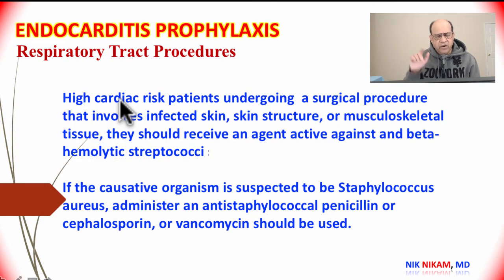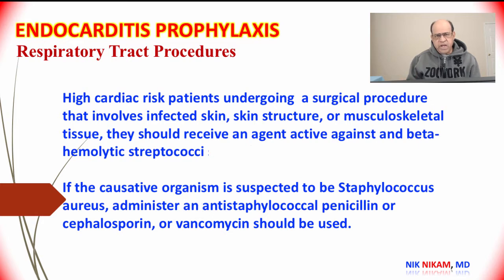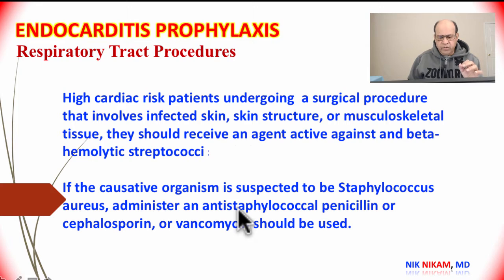High-risk cardiac patients who are undergoing surgical procedures involving the skin, structures, or musculoskeletal system should receive antibiotic prophylaxis against beta-hemolytic streptococci. If the causative agent is suspected to be staphylococcus instead of the usual Strep viridans, then we should administer antibiotics suitable for staphylococcal infections, either using penicillin, cephalosporins, or vancomycin.